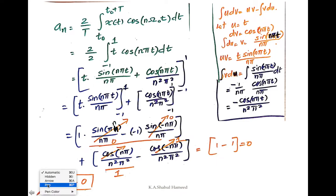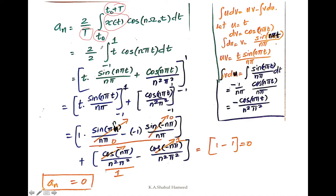Now we are going to determine a_n. The formula to find a_n is: a_n equals 2 by T, integration from t naught to t naught plus T of x(t) cos(nω₀t) dt. Substituting the value of x(t) equal to t, and the limits minus 1 to plus 1, with capital T equal to 2, we get: 2 by 2 integration from minus 1 to plus 1 of t cos(nπt) dt, since omega naught equals π.